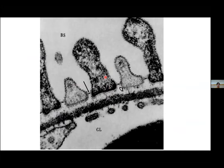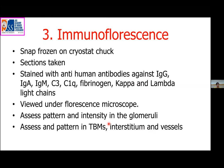On electron microscopy, the visceral epithelial cells or podocytes show foot processes attached to the lamina rara externa of the glomerular basement membrane. The glomerular basement membrane has three layers: lamina rara interna, lamina densa, and lamina rara externa. Between the foot processes is the slit diaphragm, which is very important in filtration. On the inner surface, you can see fenestrated endothelial cells lining the glomerular basement membrane. For immunofluorescence, tissue is snap-frozen on cryostat chuck and stained with anti-human antibodies against IgG, IgA, IgM, C3, C1Q, fibrinogen, and kappa and lambda light chains, viewed under fluorescence microscopy.